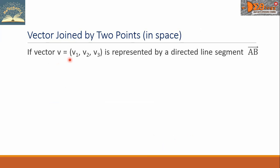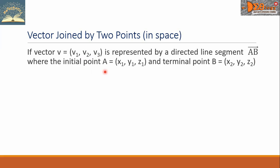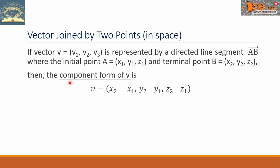If vector V equals (V sub 1, V sub 2, V sub 3) is represented by a directed line segment — vector AB — where the initial point A equals (X sub 1, Y sub 1, Z sub 1) and terminal point B equals (X sub 2, Y sub 2, Z sub 2), then the component form of V is: V equals (X sub 2 minus X sub 1, Y sub 2 minus Y sub 1, Z sub 2 minus Z sub 1).